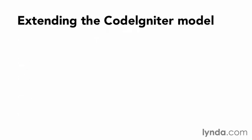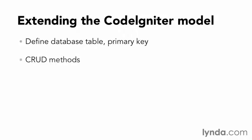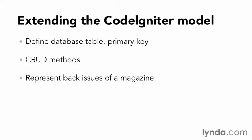In this chapter, I'm going to extend the CodeIgniter model to define the database table and primary key associated with it. Then I'll integrate CodeIgniter's database functionality with CRUD methods to allow models to save themselves, similar to traditional MVC. With this context, I'm going to create models that will allow me to represent back issues of a magazine.